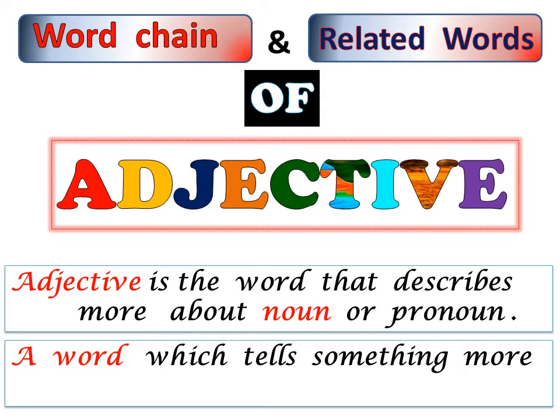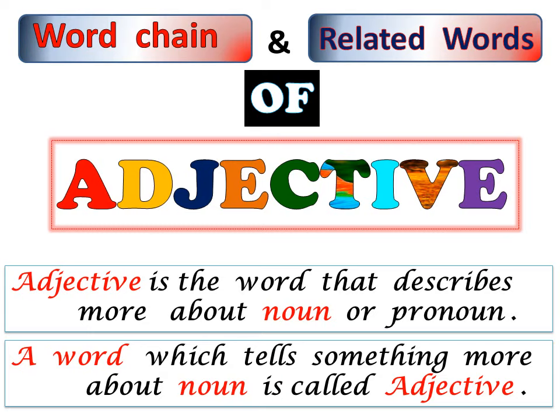A word which tells something more about noun is called adjectives. That means, a word which provides specific information about a name, that word is called an adjective.